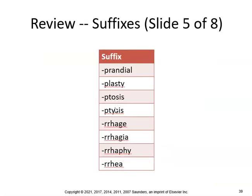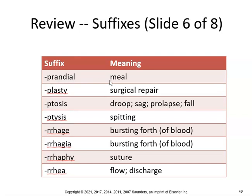Prandial means meal. Plasty is surgical repair. Ptosis means droop or sag. Rrhagia means bursting forth. Rrhaphy is suture. And rhea means flow or discharge. There are lots of things repeating now, and you're getting more and more used to these.